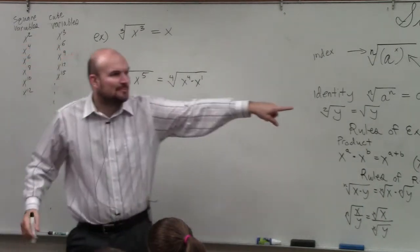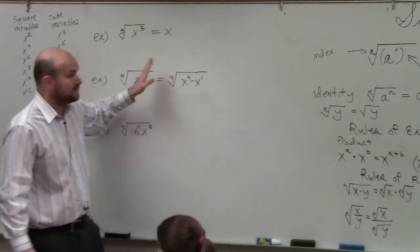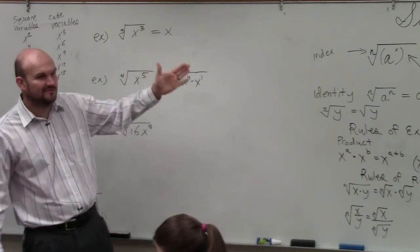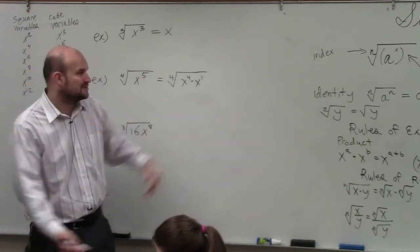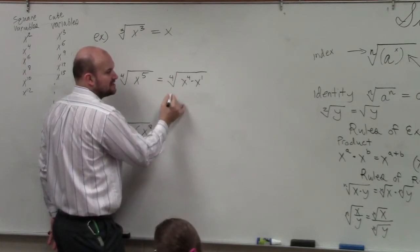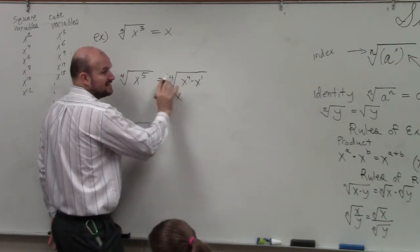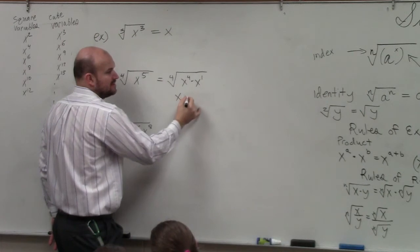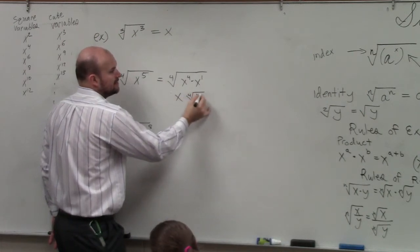So now I could separate it like I did over there. I could do 4th root of x to the fourth times the 4th root of x to the first. But again, guys, it's just really an extra step. You guys can now just take the 4th root of these separately. The 4th root of x to the fourth is now just x. I cannot take the 4th root of x to the first power, so that remains under the radical.